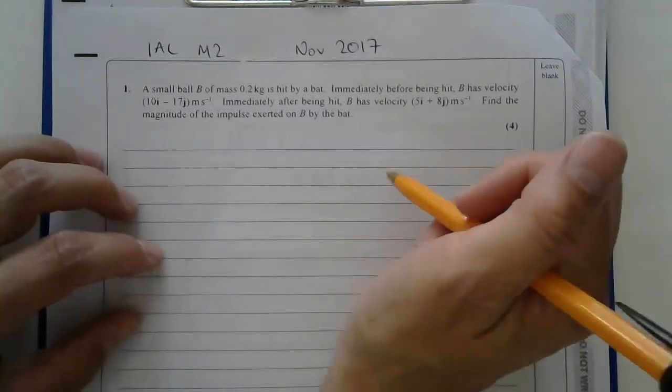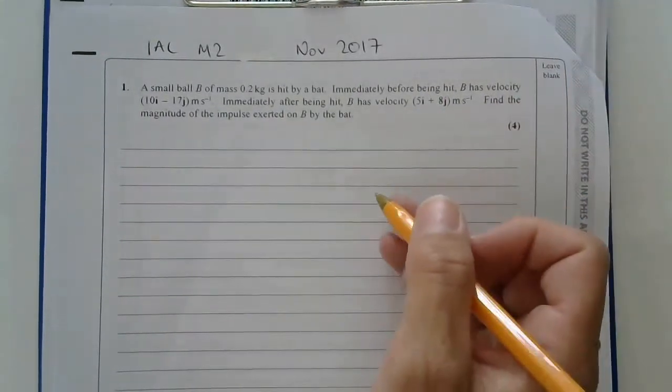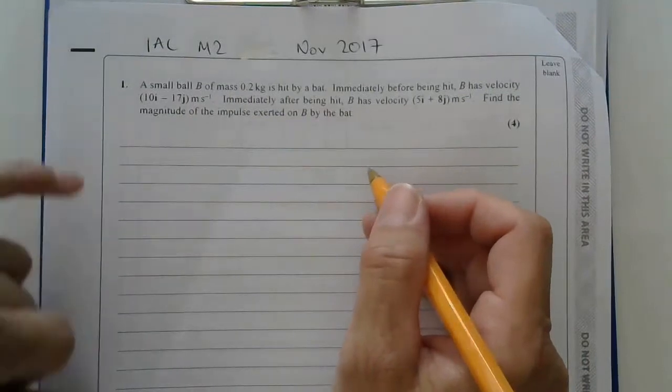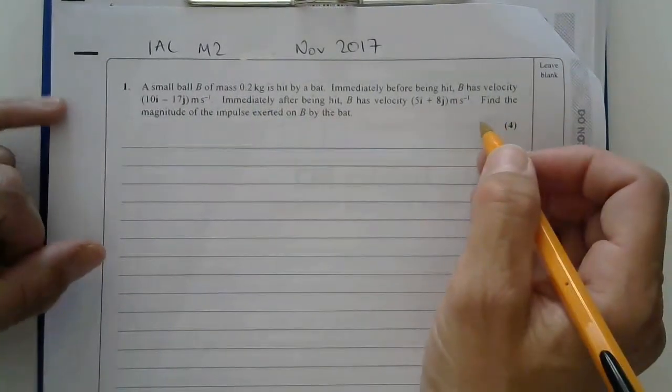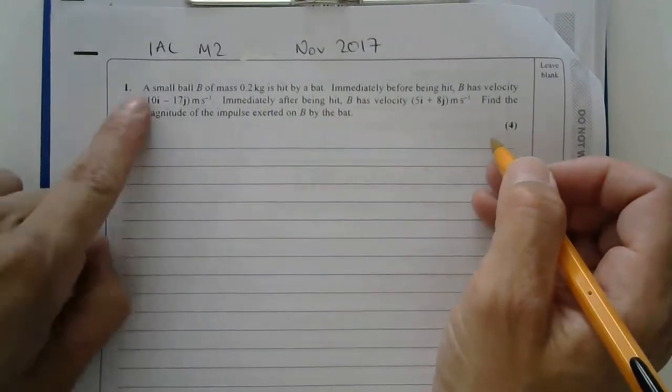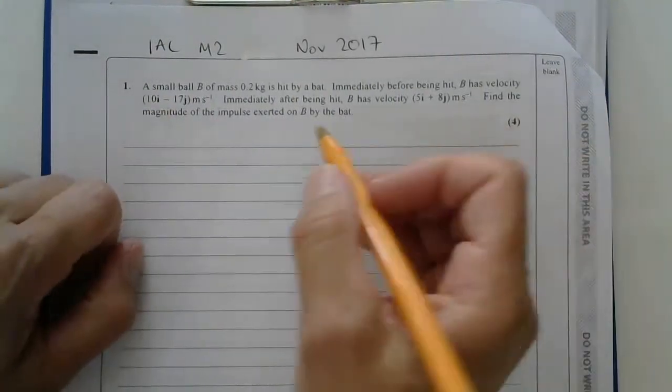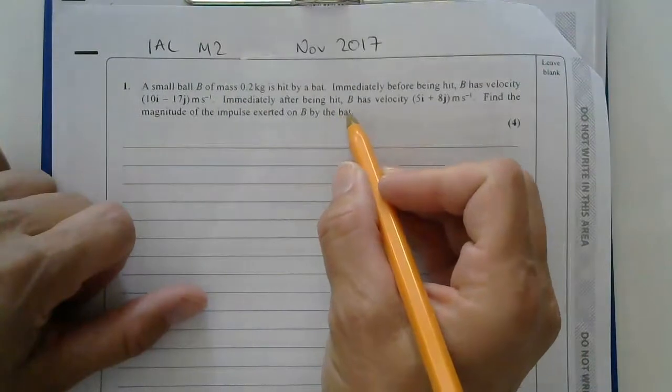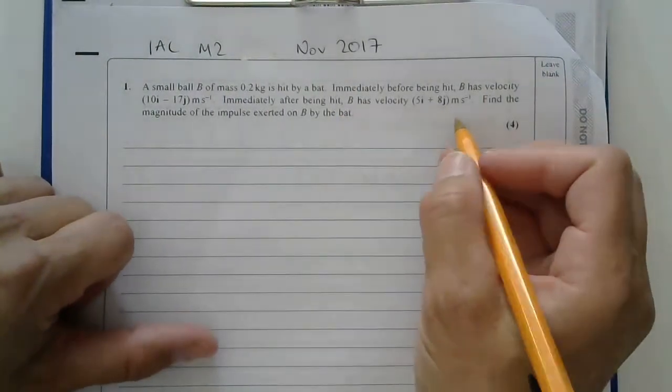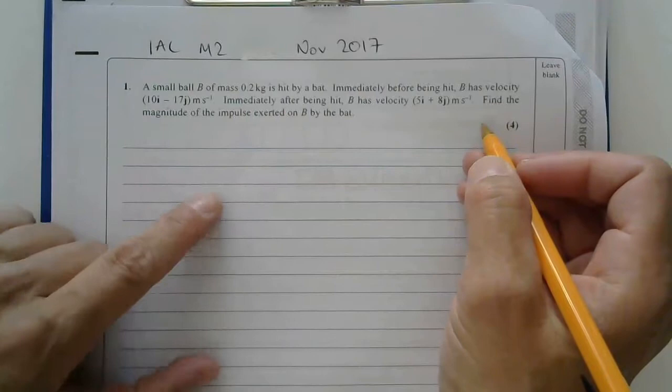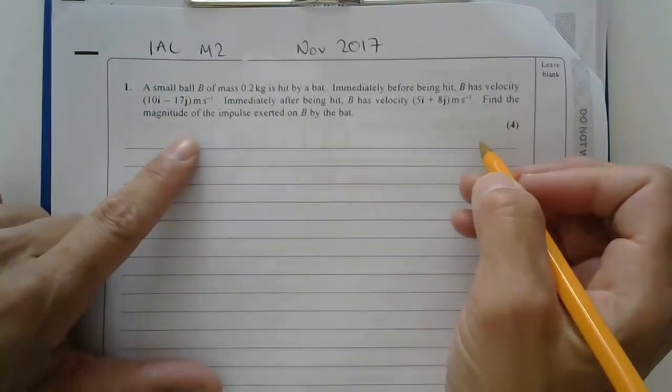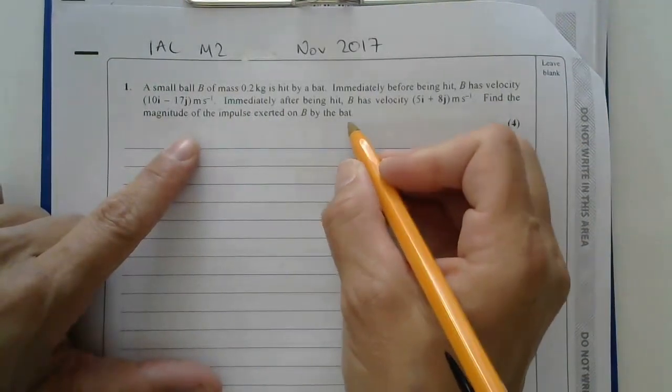A small ball B of mass 0.2 kilos is hit by a bat. Immediately before being hit, B has velocity 10i minus 17j. Immediately after being hit, B has velocity 5i plus 8j meters per second. Find the magnitude of the impulse exerted on B by the bat.